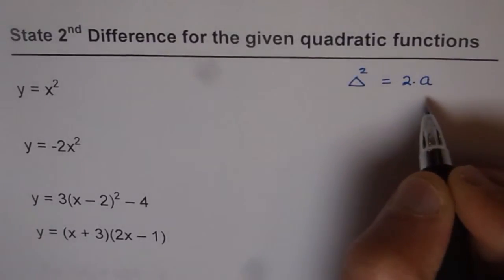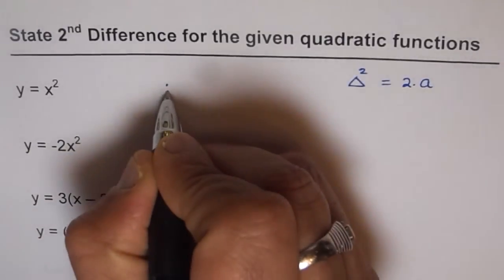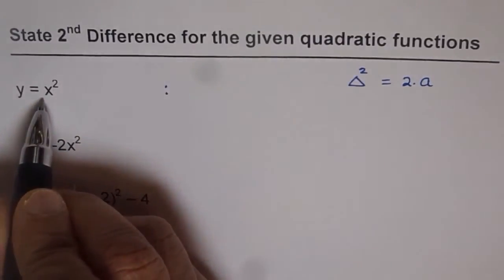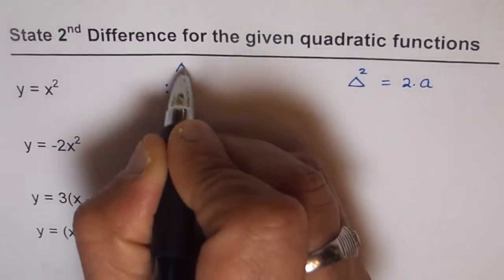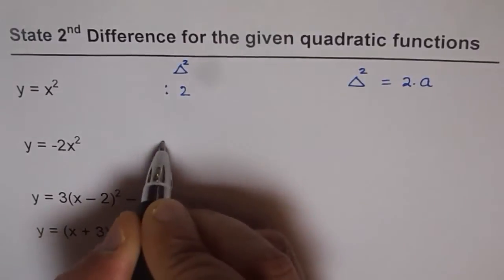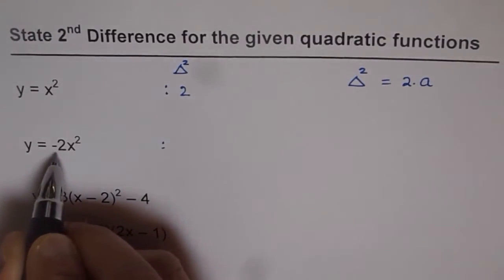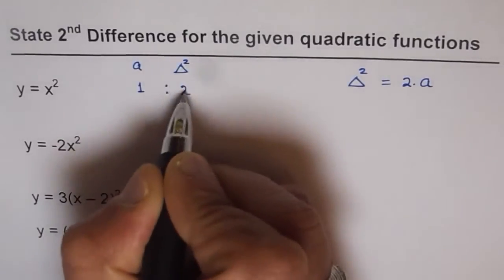With that formula I can find second difference for all these equations in a minute. For the first one, a value is 1 and therefore second difference will be 2. Here the a value is minus 2, so a value is 1 here and second difference is 2. The a value, the leading coefficient, is minus 2.